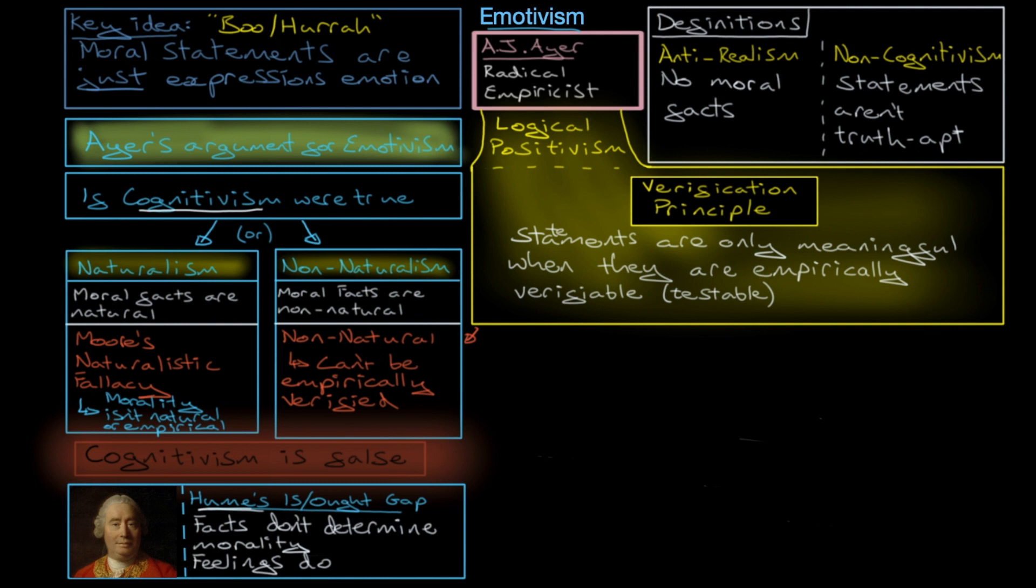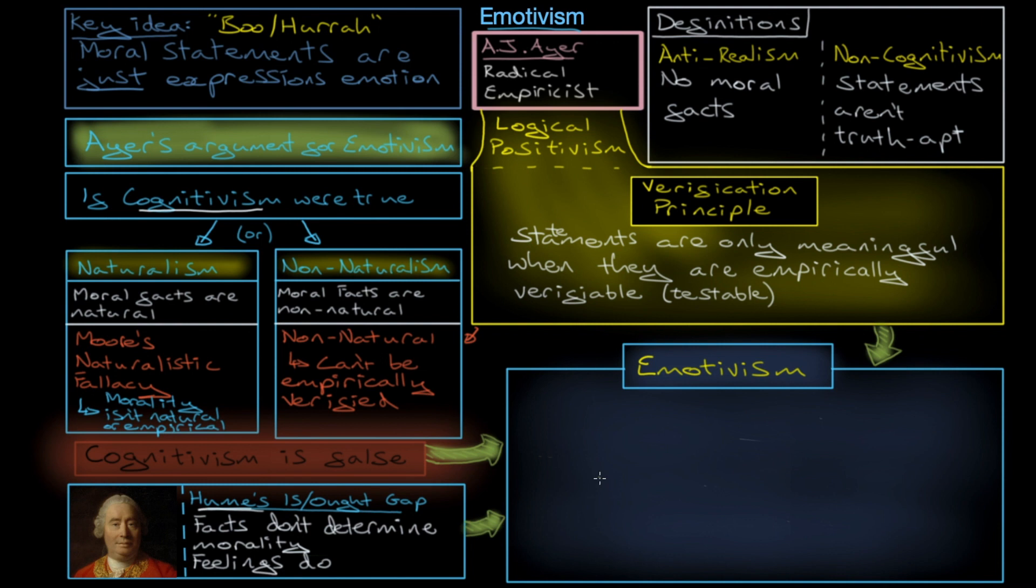And so, from all of these starting points, we get emotivism itself. And emotivism might best be defined as the idea that moral statements are just expressions of emotion. So, moral statements just express emotion.